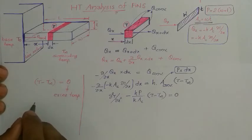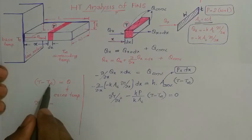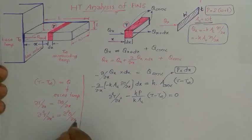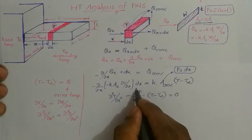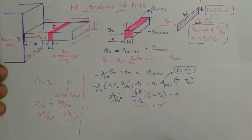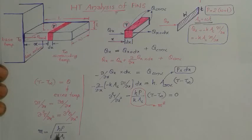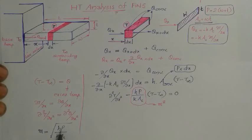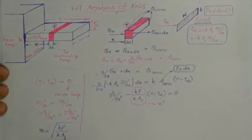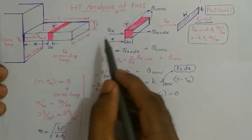Since T-infinity is constant, the partial derivative of T with respect to x equals the partial derivative of theta with respect to x, and the second partial derivative of T with respect to x squared equals the second partial derivative of theta with respect to x squared. We also define the term hP divided by (k times Ac) as the constant m squared, where m equals the square root of hP divided by (k times Ac). Here, h is the convective heat transfer coefficient, P is the perimeter of the cross-section, k is the thermal conductivity of the fin material, and Ac is the cross-sectional area (W times T).